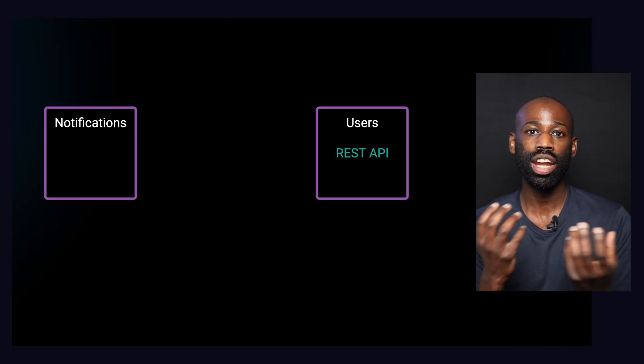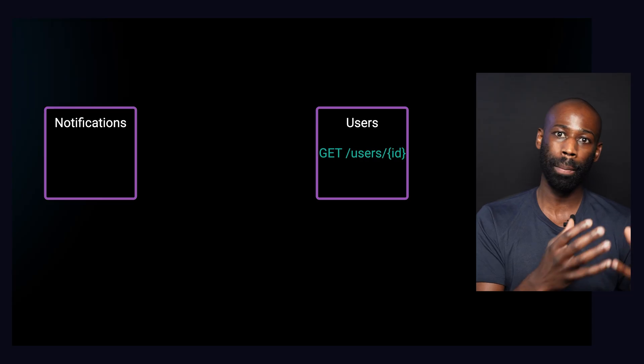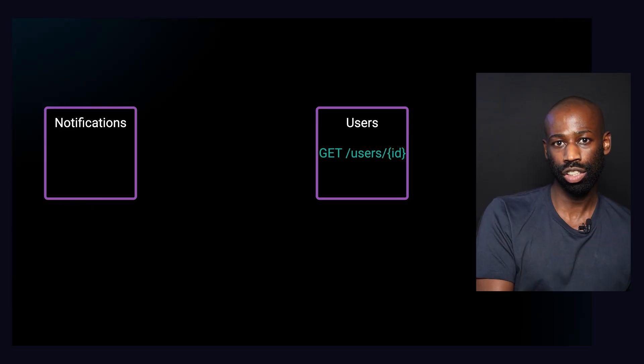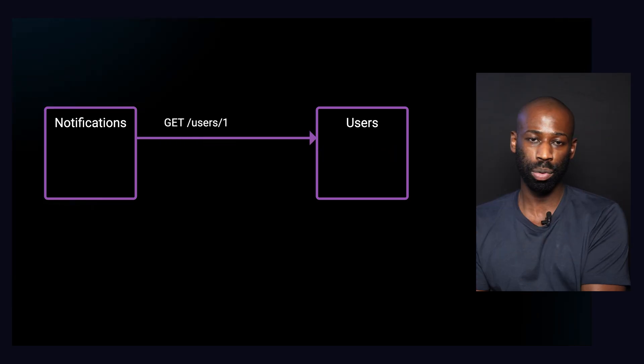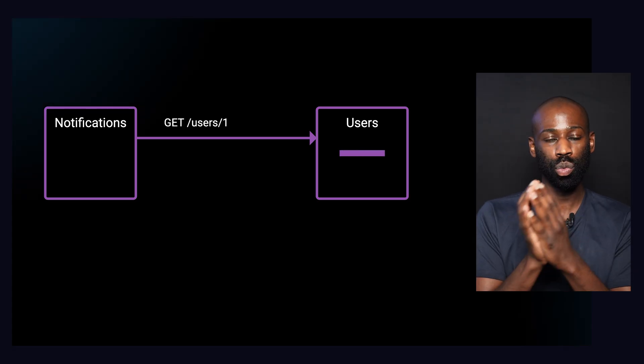One of the most popular options remains HTTP REST APIs. For example, the user service can expose a REST API with an endpoint to fetch a user by their ID. Then the notification service can send a request to that endpoint and wait for a response with the user info. Most developers are familiar with REST APIs, and there are a lot of tools and frameworks to build and consume them. Sending a request and waiting for a response is easy to understand and implement.